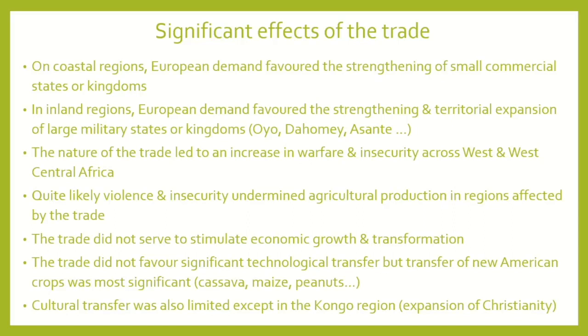There are other impacts to think about — fundamentally the political and economic impact. On the coastal regions, European demand favored the strengthening of small commercial state kingdoms, where political elites were converting their wealth into political power. We see the emergence of some powerful kingdoms and the strengthening of existing ones. Some of these kingdoms, like the Kingdom of Congo, already existed prior to the arrival of the Europeans. In the inland regions, those who were supplying the enslaved Africans were able to strengthen their power.